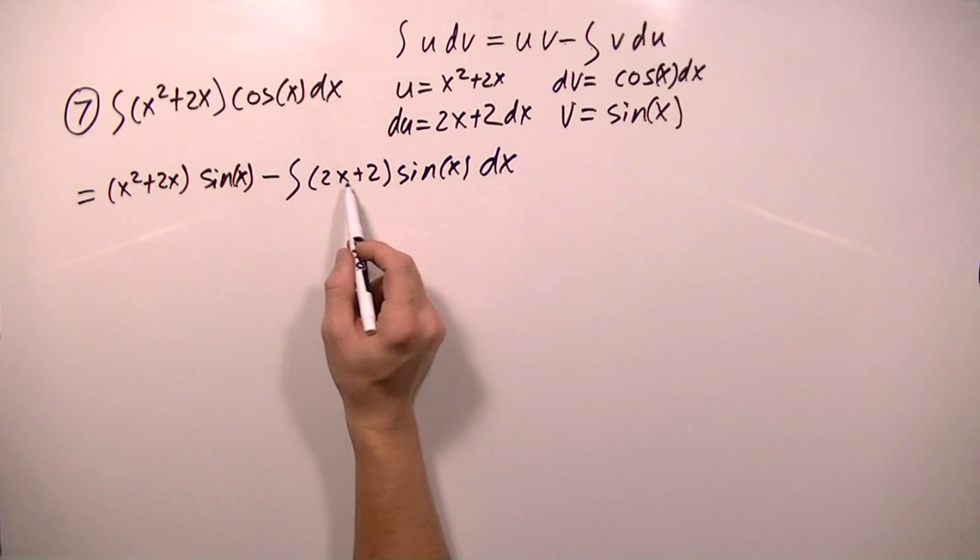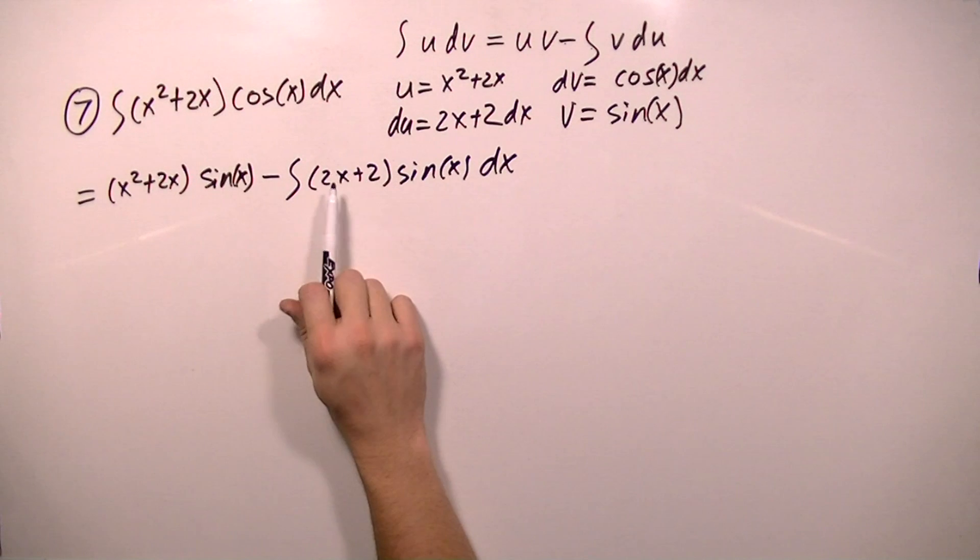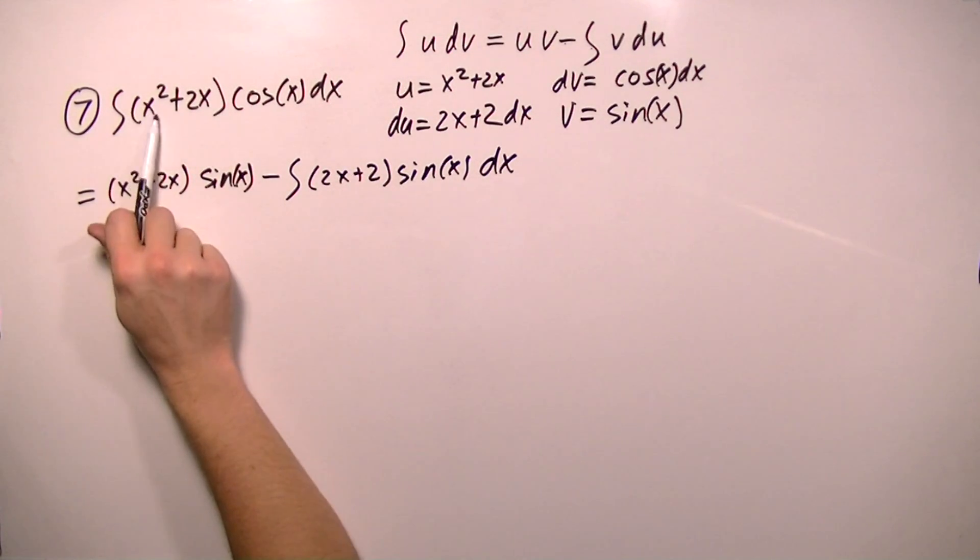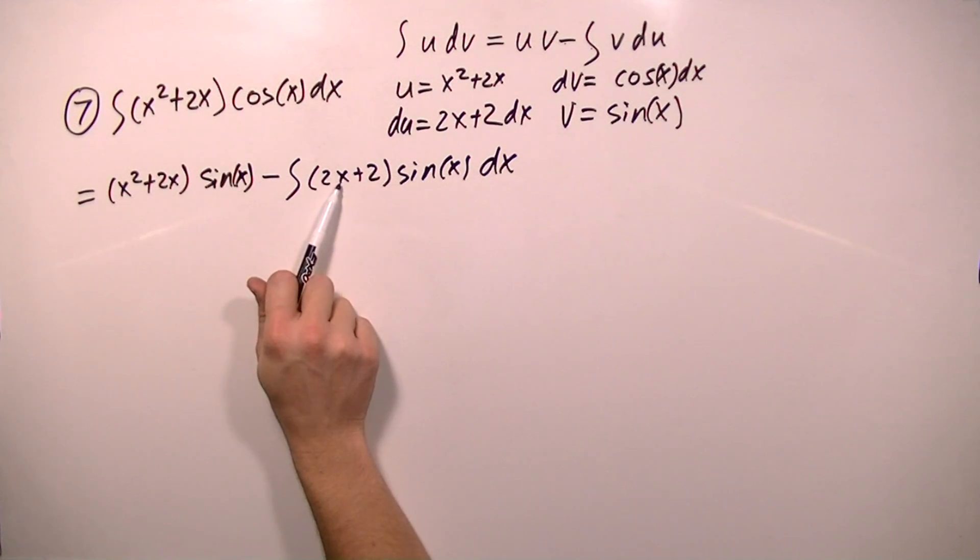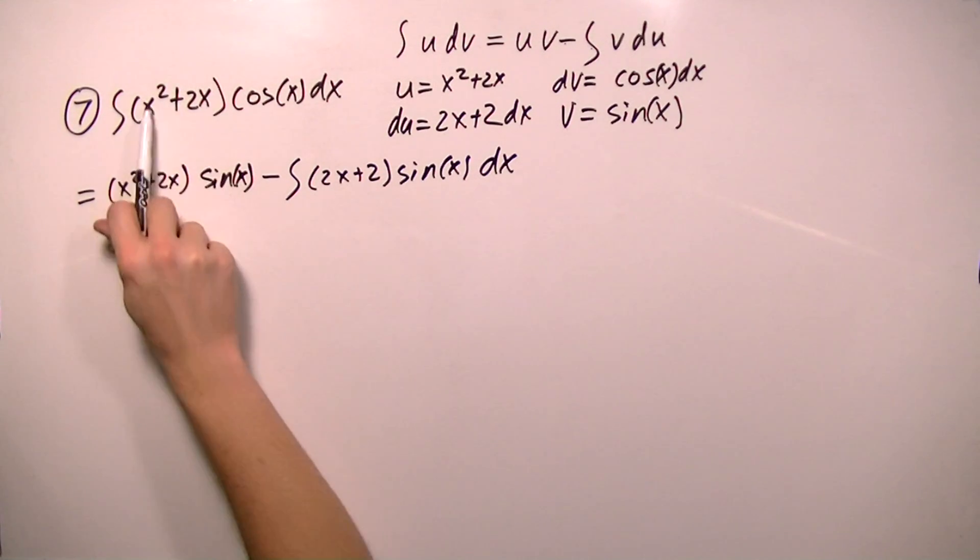And this problem is a trick because we will actually have to use integration by parts again. You can see that originally we had x squared plus 2x times cosine, and here we have 2x plus 2 times sine. So this factor was reduced by a degree when we did our first integration by parts, and hopefully when we do our integration by parts again, this will reduce down to a constant. So see we went from x squared and x to just an x and then a constant.